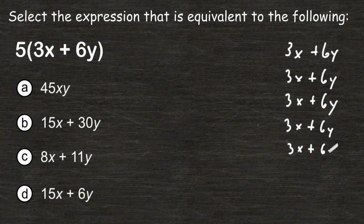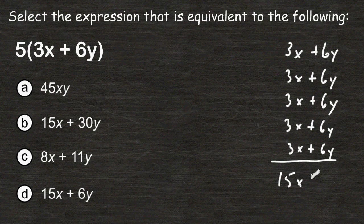And then we can just look straight down the columns and add those terms together. So if we add 3x plus 3x that's 6x, 9x, 12x, and 15x. Plus we have 6y plus 6 more y which is 12y, 18y, 24y, and 30y.